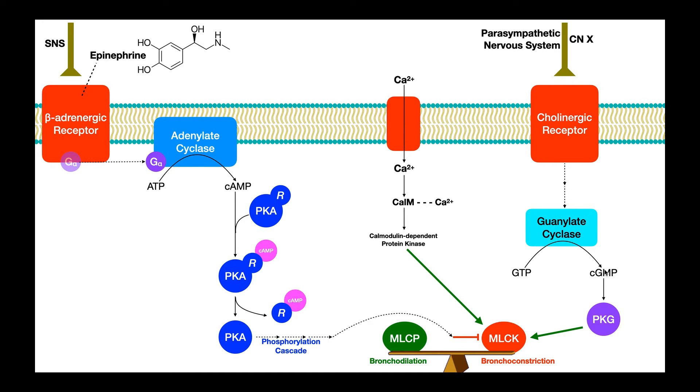The second job of cyclic GMP, which I don't really have shown here for the sake of space, is to come over here and activate these ion channels. So this ion channel is one that relays calcium into the cell. So when cyclic GMP is made, it comes over here, activates this ion channel, and allows calcium influx into the cell. Once inside the cell, calcium is going to bind to this protein called calmodulin.